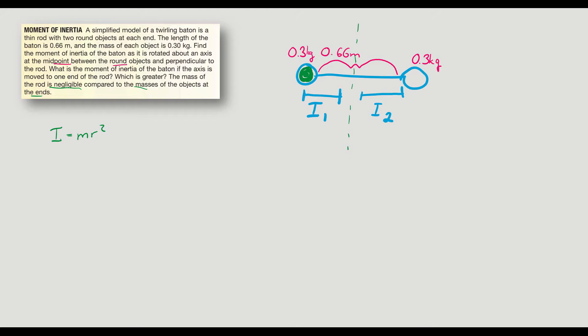My moment of inertia is the mass right here times the radius, which is the distance from the rotation to the object. So that's 0.33. We divide the rod in half, 0.33 squared.